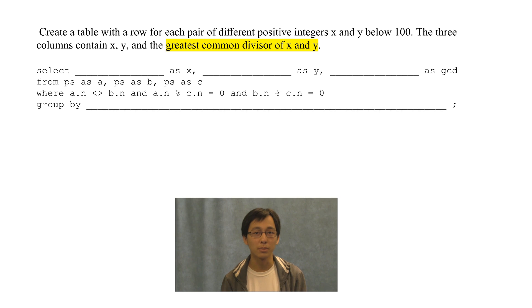Now, as for the name of the columns, a.n is x, b.n is y, but what about the GCD?